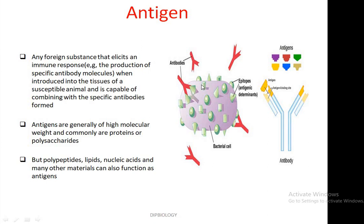Antigens have different epitopes or antigenic determinant sites. On the basis of these antigenic determinant types or epitopes, the nature of the antigen epitopes determines how an antibody can react to those particular antigens. Antibodies possess special regions called antigen binding sites, through which the antibody can neutralize the antigen.